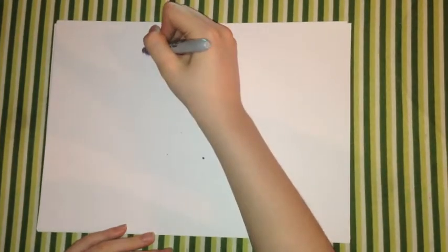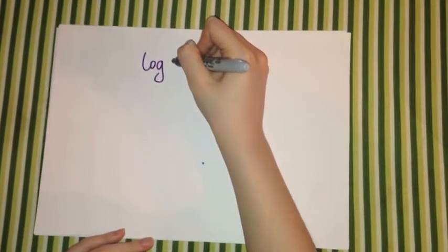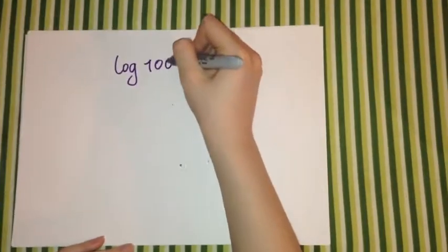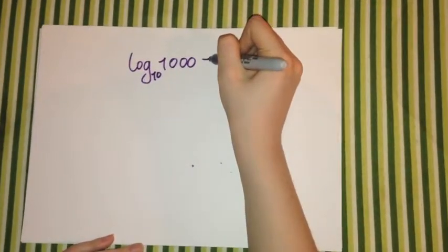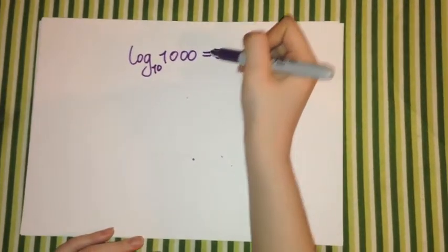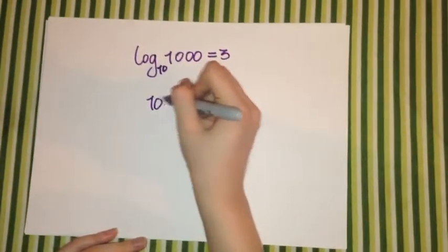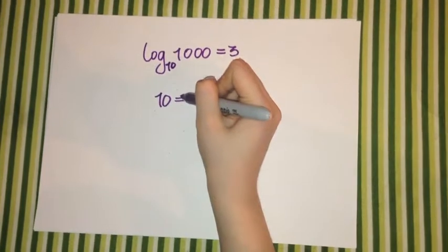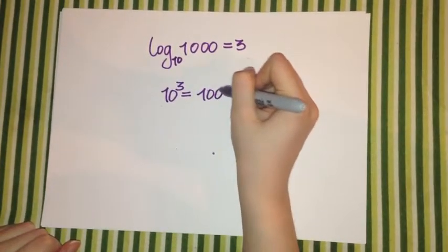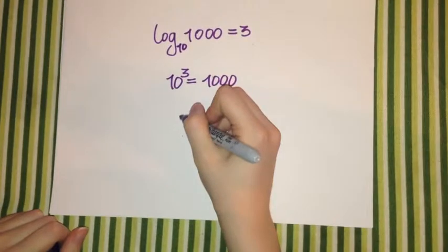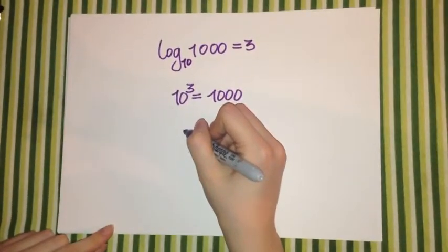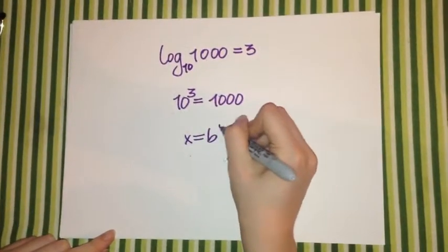The logarithm of a number is the exponent to which another fixed value, the base, must be raised to produce the number. For example, the logarithm of 1000 to base 10 equals 3 because 10 to the 3 equals 1000. So generally, if x equals b to the y, then y is the logarithm of x to base b.